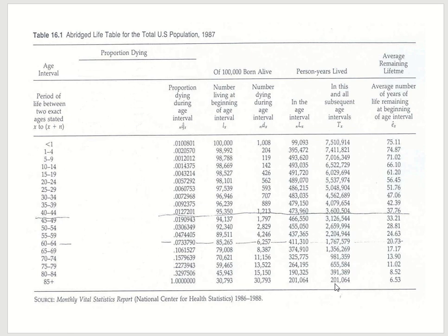The accumulation is done bottom-up. The last entry — 200,064 — you plug it in first. Then you add to it whatever was above it: 200,064 plus 190,325 gives 391,389; add 264,195 to get 655,584. You keep doing that until you reach the first entry. What the first entry means is that these 100,000 babies born in 1987 are going to live together a total of 7.5 million years.